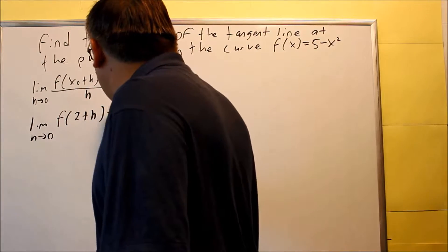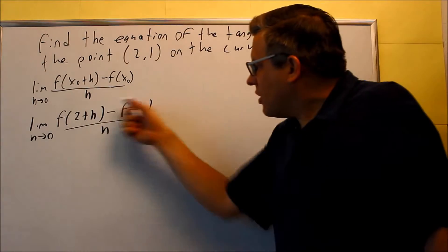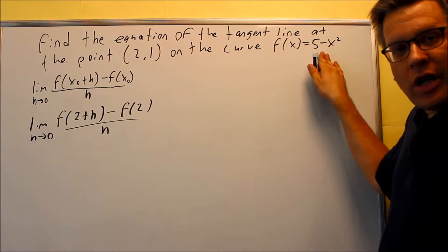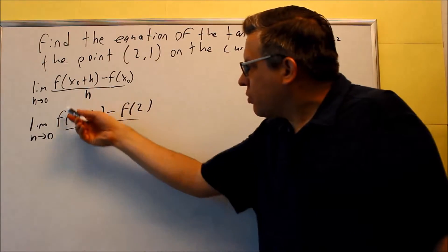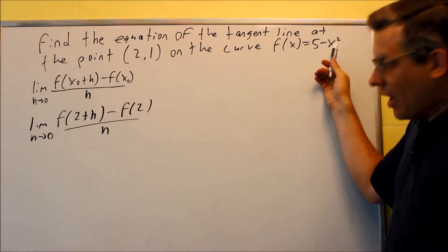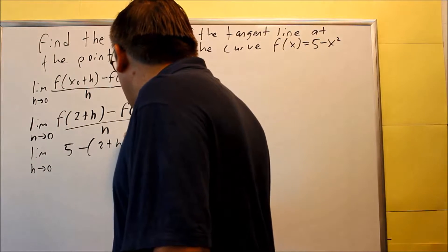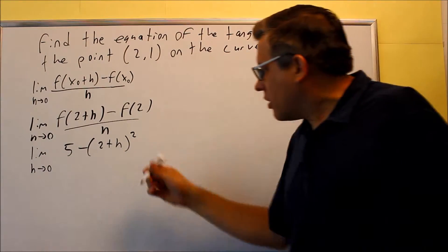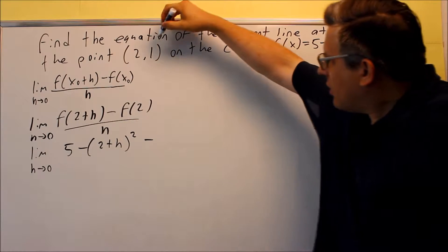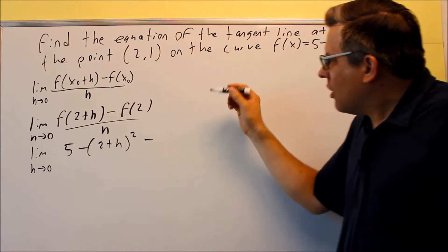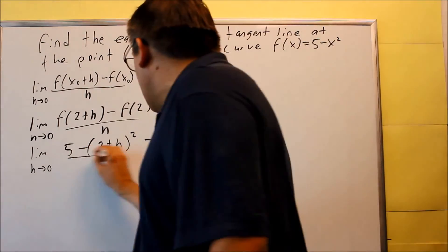So I have f of (2 plus h) minus f of 2, and we don't put anything in for h because we're going to be doing a limit. Each of these we can fill in based on the equation. f of (2 plus h) means we put (2 plus h) into the formula in place of x, giving us 5 minus (2 plus h) squared. Then f of 2 is just the y value of the given point, which is 1. This is all divided by h.